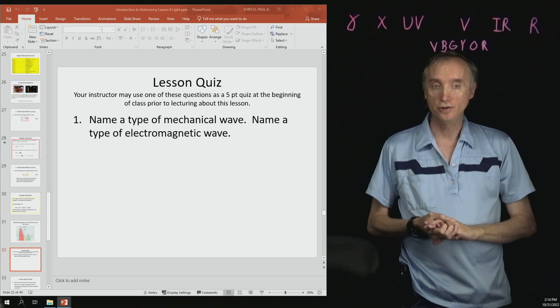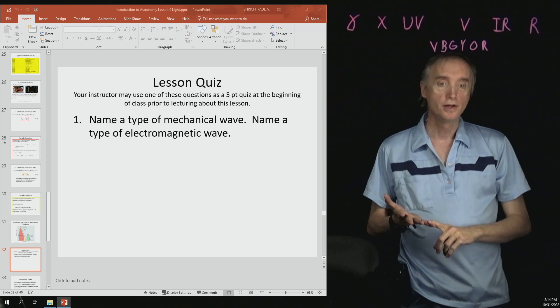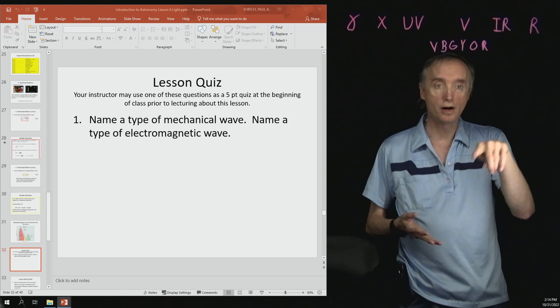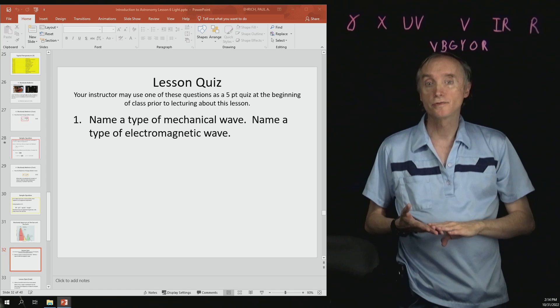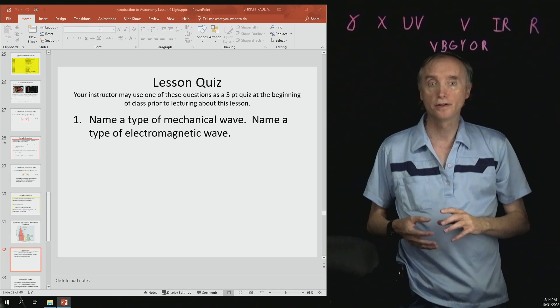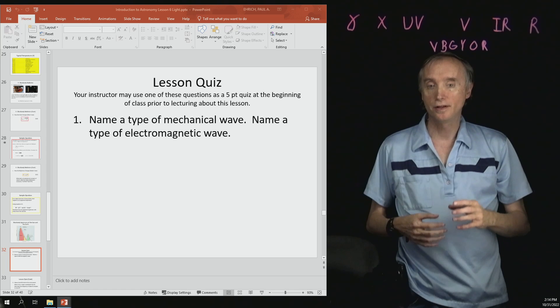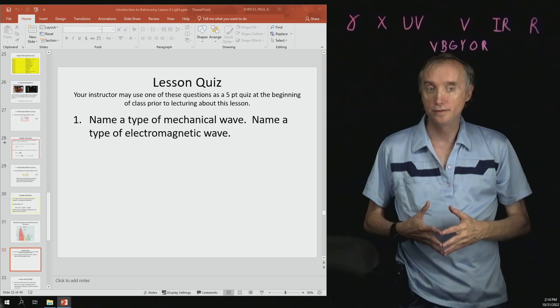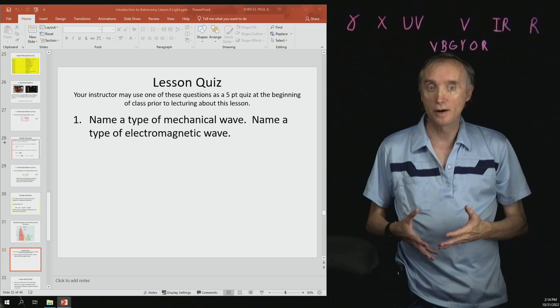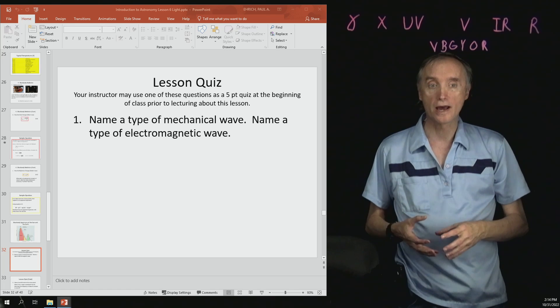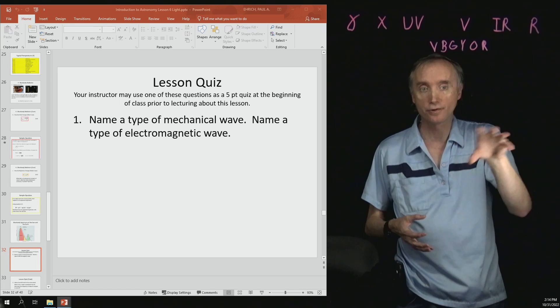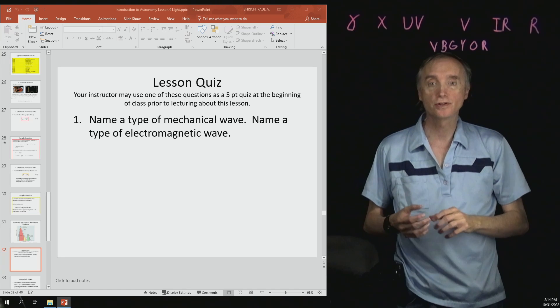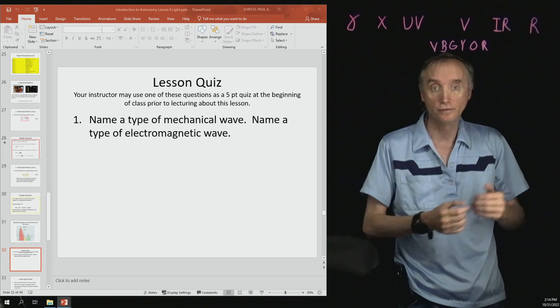So you could say earthquake waves, you could say ripples on a pond, you could also say sound waves traveling through air. So basically any kind of wave that is propagated, it is moved by matter. So as matter is going up and down or in and out, it's actually transporting the wave through it.